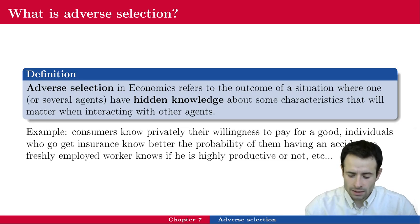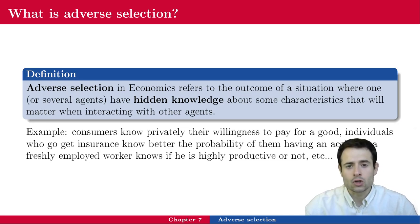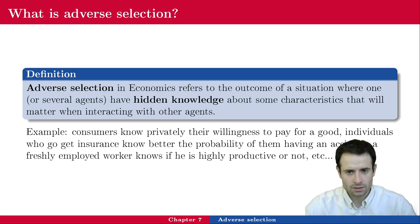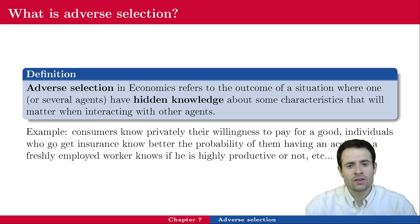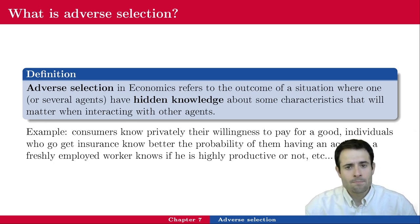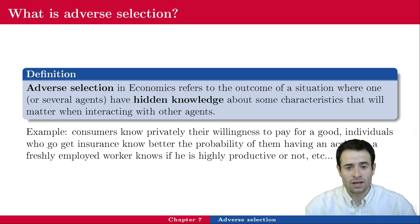The idea is that one side of the contract or the transaction or the market has information that the other side doesn't have, and we are going to see how this might lead to a market failure.